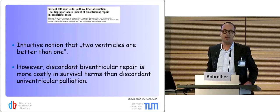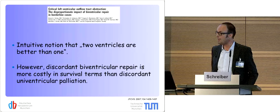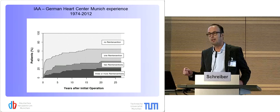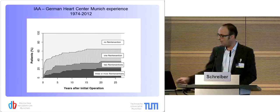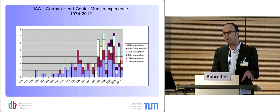The summary from this paper, which I quite like: the intuitive notion that two ventricles are better than one exists. However, a discordant biventricular repair is more costly in survival terms than a discordant univentricular palliation. And coming back to the data I showed earlier — apart from genetic abnormalities — many patients will come back several times over the years, and we even had patients who came back a sixth time in Munich.